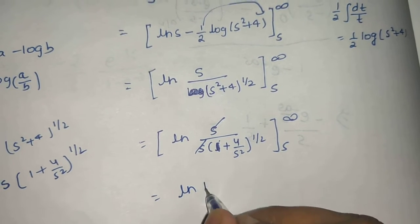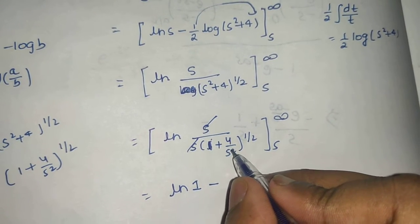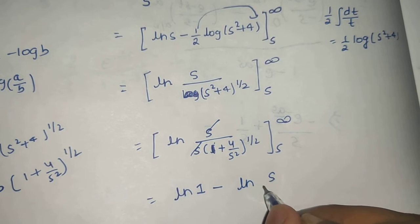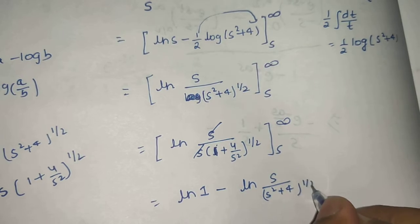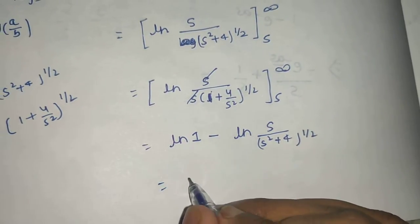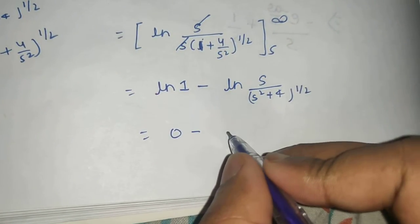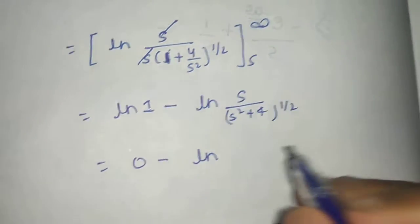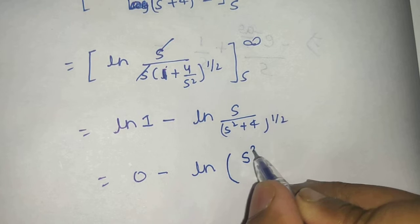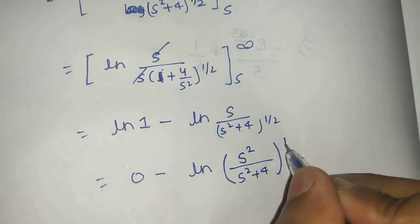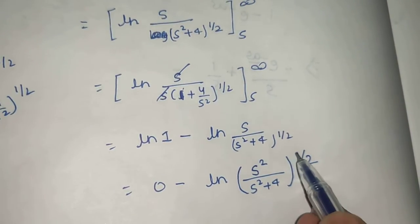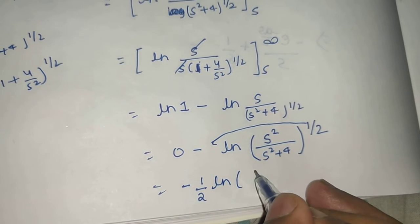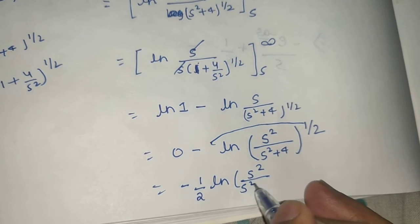Log of 1 is 0, so the first term vanishes. Putting s in place of s gives us minus ln of s divided by (s² + 4)^(1/2). We can write s as s² to the power half and combine: s² and s² + 4 collectively to the power half. Taking the power out, the final result is 1/2 ln(s² / (s² + 4)).